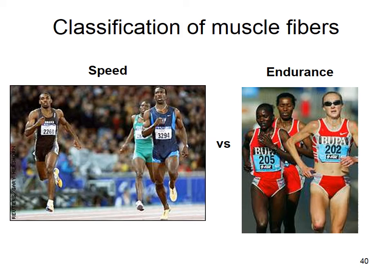World-class sprinters have a lot of fast twitch oxidative and fast twitch glycolytic fibers — they want fast twitch fibers. Endurance athletes want a lot of slow twitch oxidative as well as some fast twitch oxidative fibers.